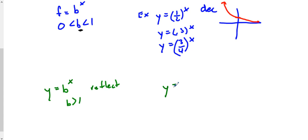So if I have y equals negative b to the x, what happens is that this graph, instead of going up like this and increasing, it's going to be reflected over the x-axis, and the graph is going to go like so.